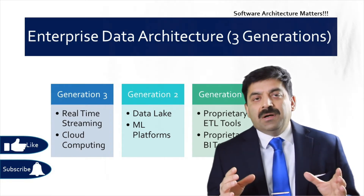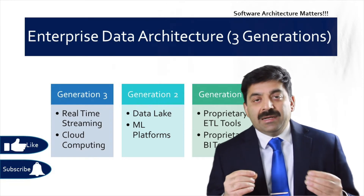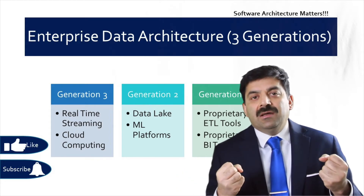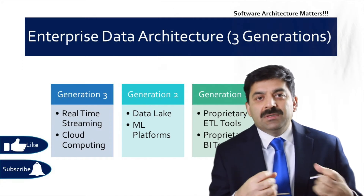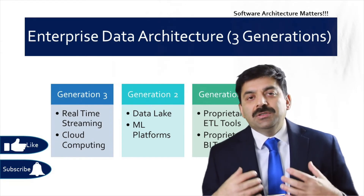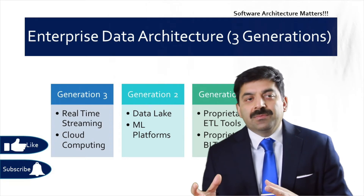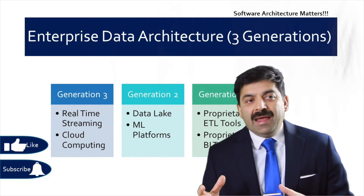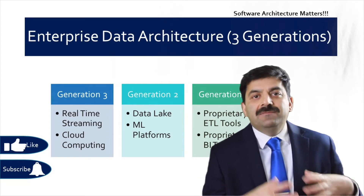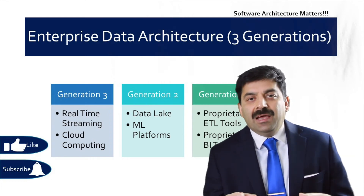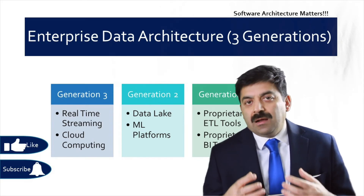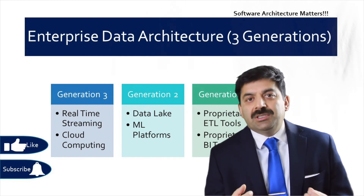The third generation came about with real-time processing — you were feeding data in real-time so that analytics could act on it. You were also merging batch and real-time information using frameworks like Apache Beam, and you leveraged the cloud for storing your data, running jobs, and supporting your machine learning platform. This third generation filled some gaps from the second generation, like real-time processing for analytics and using cloud to reduce storage costs.